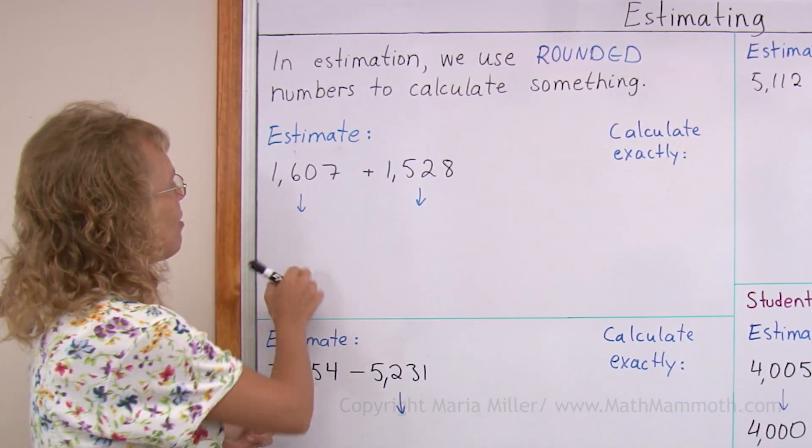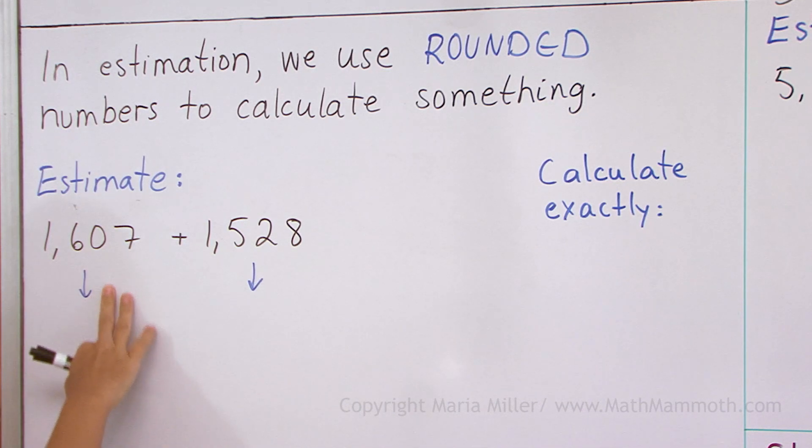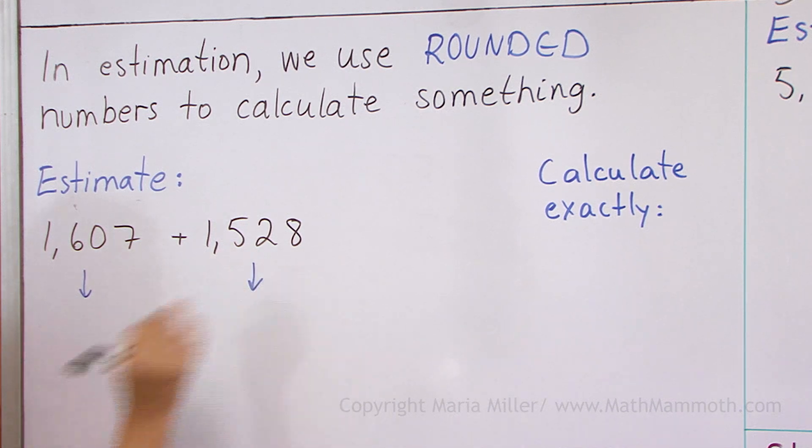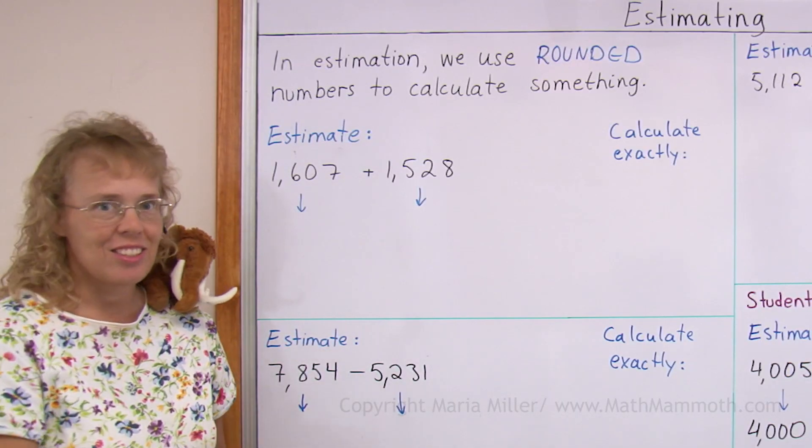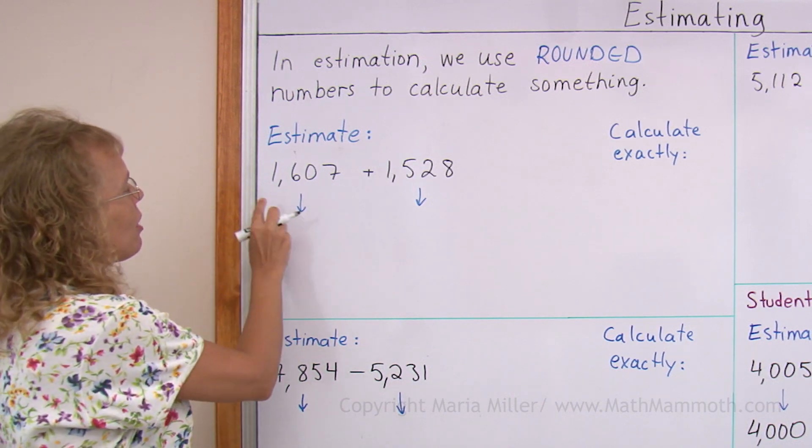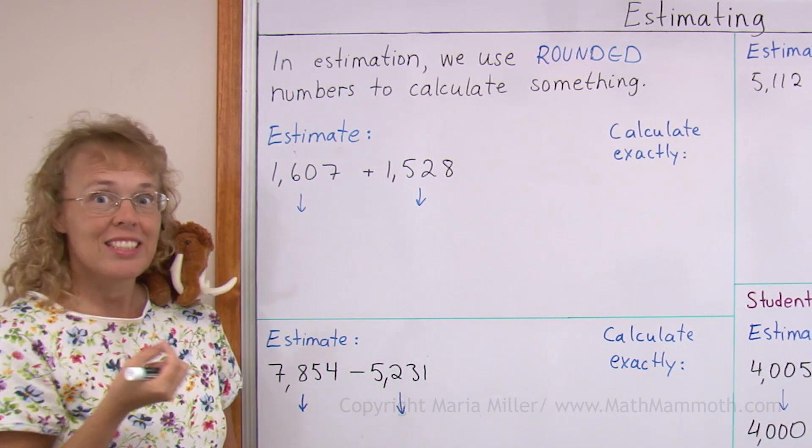For example, if I have here 1,607 and 1,528, I can estimate the answer by using rounded numbers. So let me round this number to the nearest hundred.